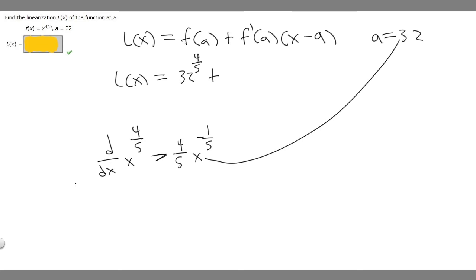So we have this, but we're plugging in a, so it's going to become 4/5 times 32 to the minus 1/5. Then we're multiplying by x, and then minus a, which is 32.